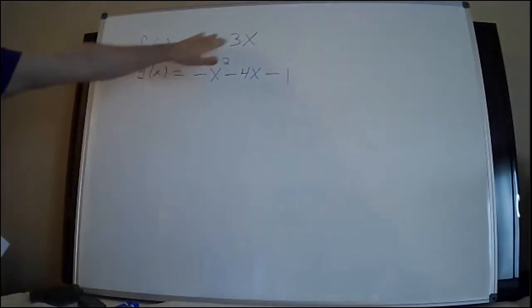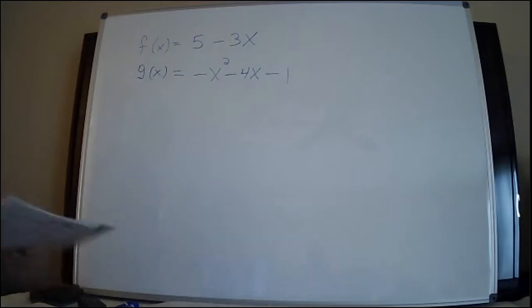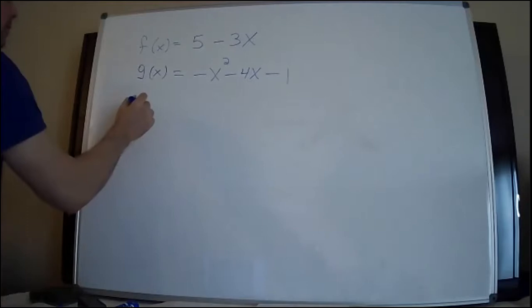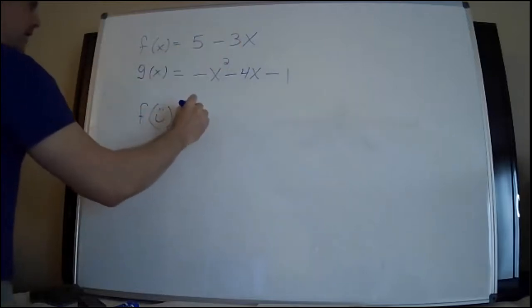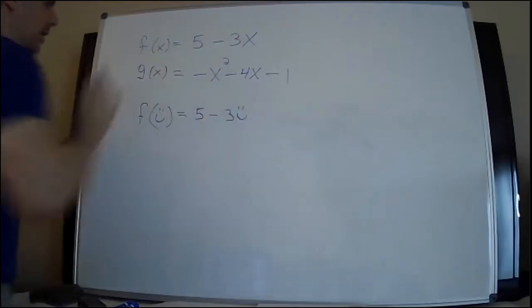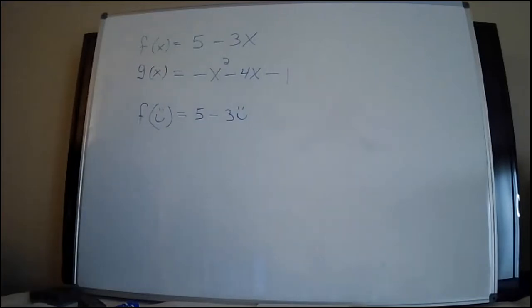So F of x equals 5 - 3x, G of x equals -x² - 4x - 1. Hopefully you can see this better with the better camera. Now I want you to understand, you can plug anything into these functions. You can plug numbers, you can plug letters, and you can plug whatever. Look, I'm going to do F of smiley face. Wherever you see x, you put smiley face. It doesn't matter what you plug in there.